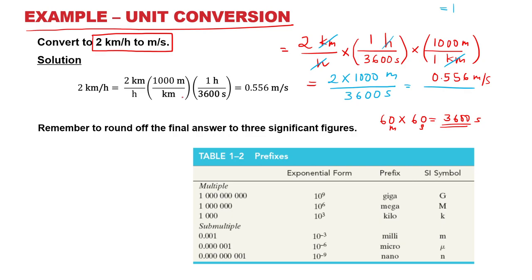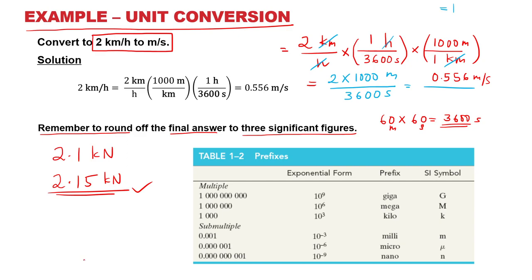Your final answer should have at least three significant figures. For example, if you have 2.1 kN, a better answer would be 2.15 kN. Similarly, if you have 0.1 N, maintain proper significant figures such as 0.15 N.